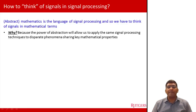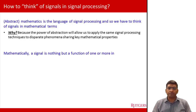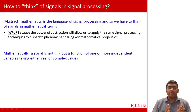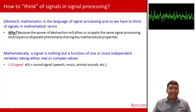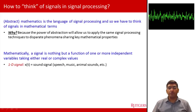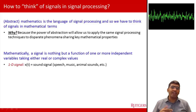So what is a signal mathematically in signal processing? It is nothing but a function of one or more independent variables, and the function takes either real or complex values. An example of a 1D signal is x(t) — a signal that is a function of one independent variable. A real-world example is speech or music: as I'm speaking, a microphone records that information as an electrical current varying as a function of time, so that's x(t) — one independent variable.